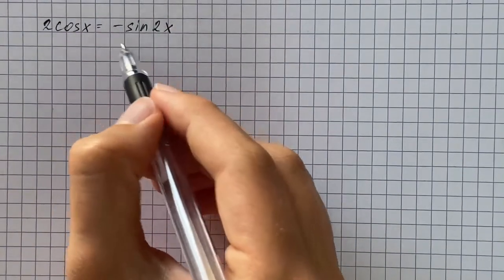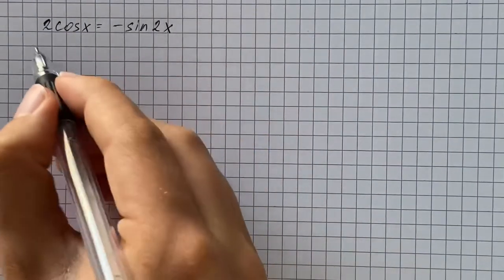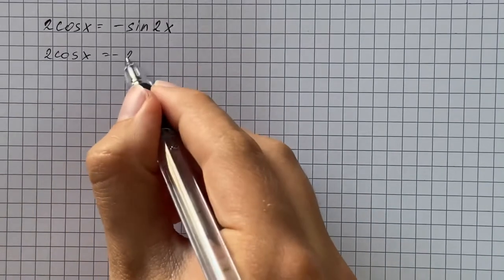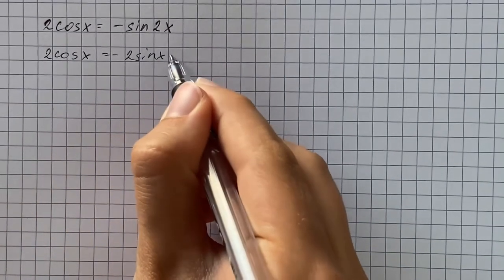First, we're going to rewrite the right side of the equation using the identity that sine of 2x equals 2 sine of x times cosine of x.